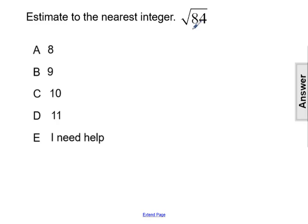In order to do that, we have to first look at the radicand, or the number underneath the radical, or square root sign, which is 84.